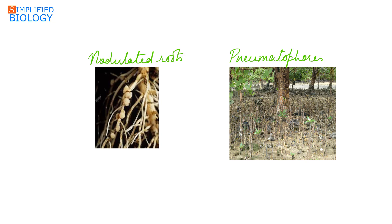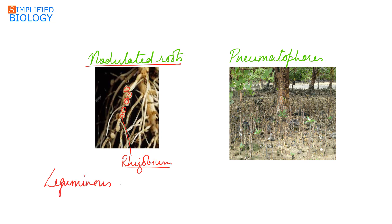Besides modification for food, tap roots also show other modifications. Nodulated roots: in these roots, nodules are found on the primary roots, secondary roots, and their branches. Present in these nodules is the symbiotic bacteria Rhizobium, which helps in nitrogen fixation. Nodulated roots are found in leguminous plants — plants belonging to family Fabaceae, such as the pea plant.